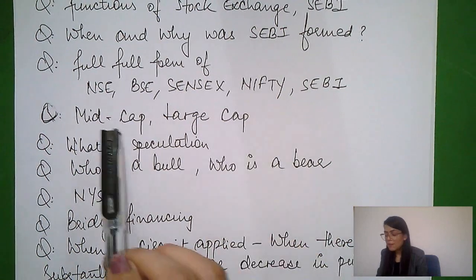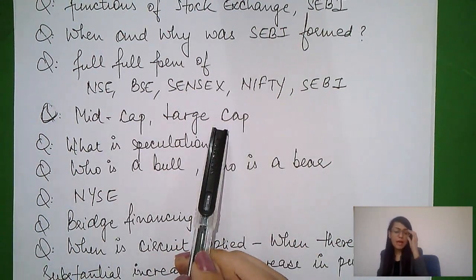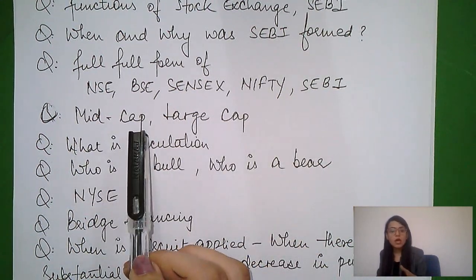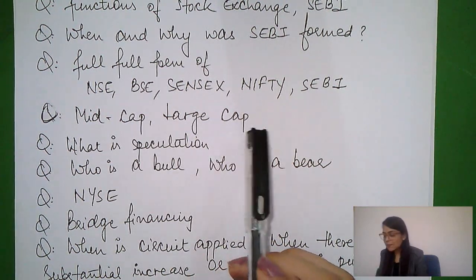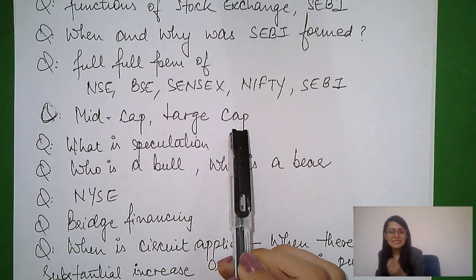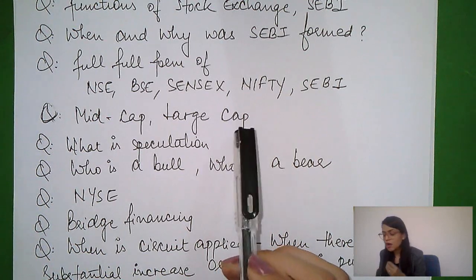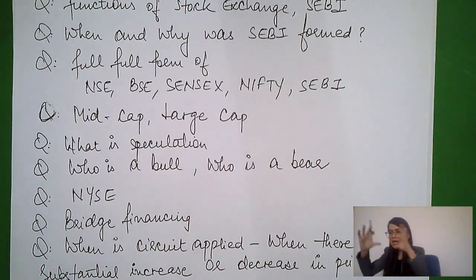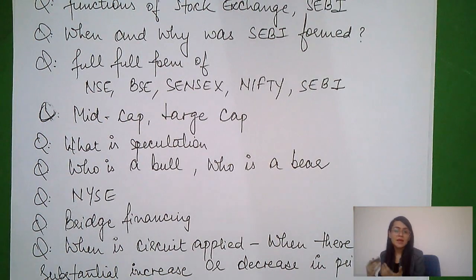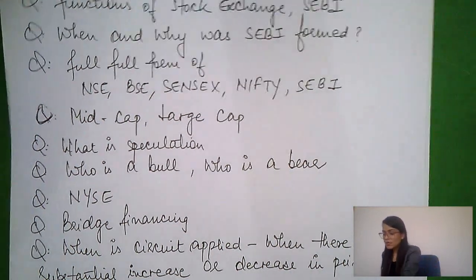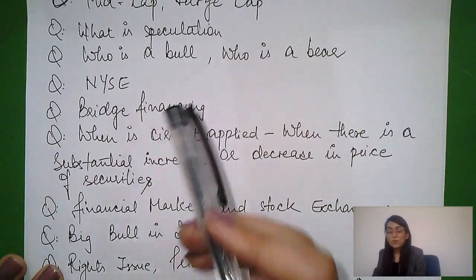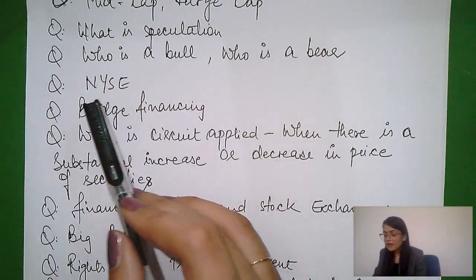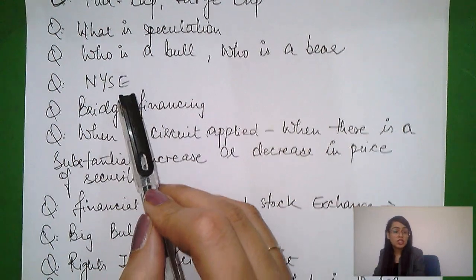You should also know: SENSEX mid-cap — mid-cap means medium size companies; large cap means large size companies. Market capitalization is calculated as number of shares multiplied by market value of share. Companies are categorized as mid-cap or large-cap based on market capitalization. Other key terms: speculation, who is a bull, who is a bear, bullish market, bearish market, NYSE — New York Stock Exchange — and bridge financing.